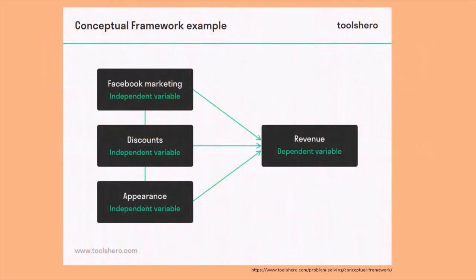Here is an example of a conceptual framework. Unlike the theoretical framework which uses complete conceptual statements, a conceptual framework basically identifies independent and dependent variables. In this example — related to marketing — three independent variables are identified: Facebook marketing, discounts, and appearance. All three are variables that contribute to revenue, which is the dependent variable. This is an example of a conceptual framework.